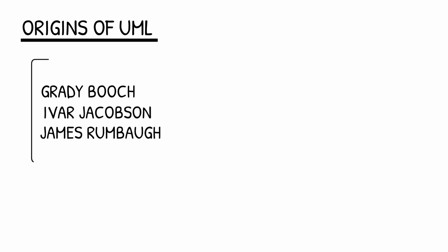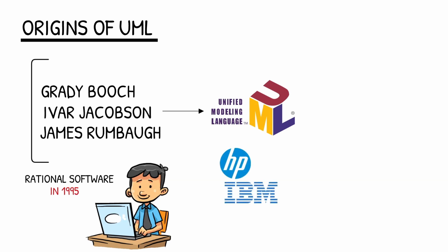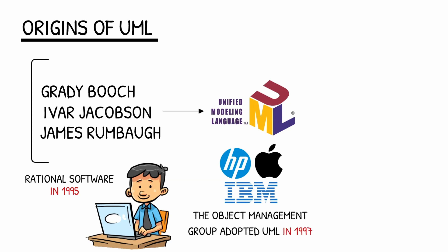What are the origins of UML? Grady Booch, Ivar Jacobson, and James Rumbaugh developed the Unified Modeling Language while working at Rational Software in 1995. The Object Management Group, which includes Hewlett-Packard, IBM, and Apple Computer, adopted UML as a standard for its members in 1997. With interoperability in mind, this ensured that UML would be a shared visual language for many years to come.